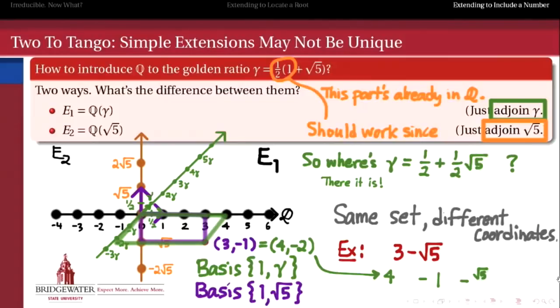But then multiply that out. 4 minus 1 minus radical 5. 3 minus radical 5. So the same element belongs to both E1 and to E2.